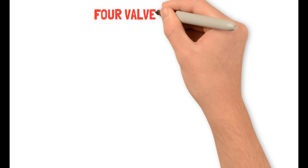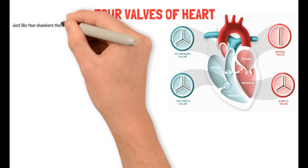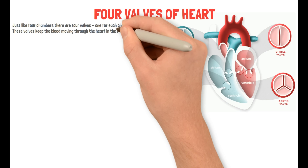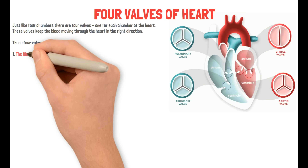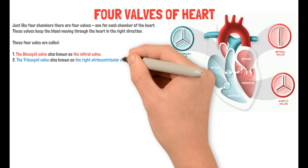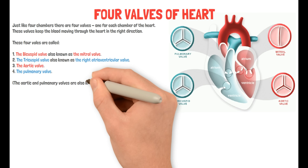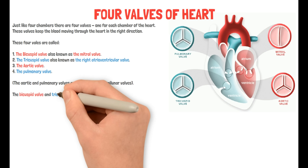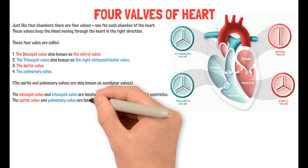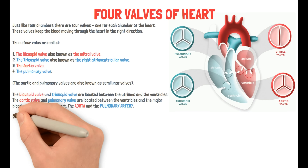Now after the four chambers, it's time for the four valves of the heart. We have a diagram on the right for your visual understanding. There are four valves, one for each chamber of the heart. These valves keep the blood moving through the heart in the right direction. The four valves are: the bicuspid valve, also known as the mitral valve; the tricuspid valve, also known as the right atrioventricular valve; the aortic valve; and the pulmonary valve. The aortic and pulmonary valves are also known as semilunar valves. The bicuspid and tricuspid valves are located between the atria and the ventricles, whereas the aortic and pulmonary valves are located between the ventricles and the major blood vessels leaving the heart, such as the aorta and the pulmonary artery.